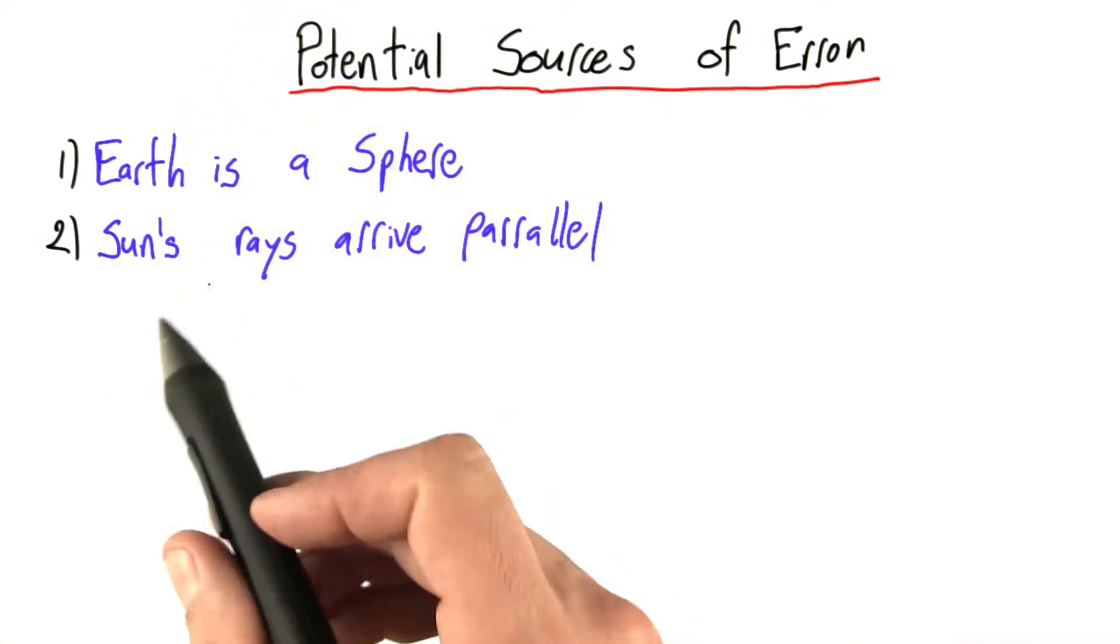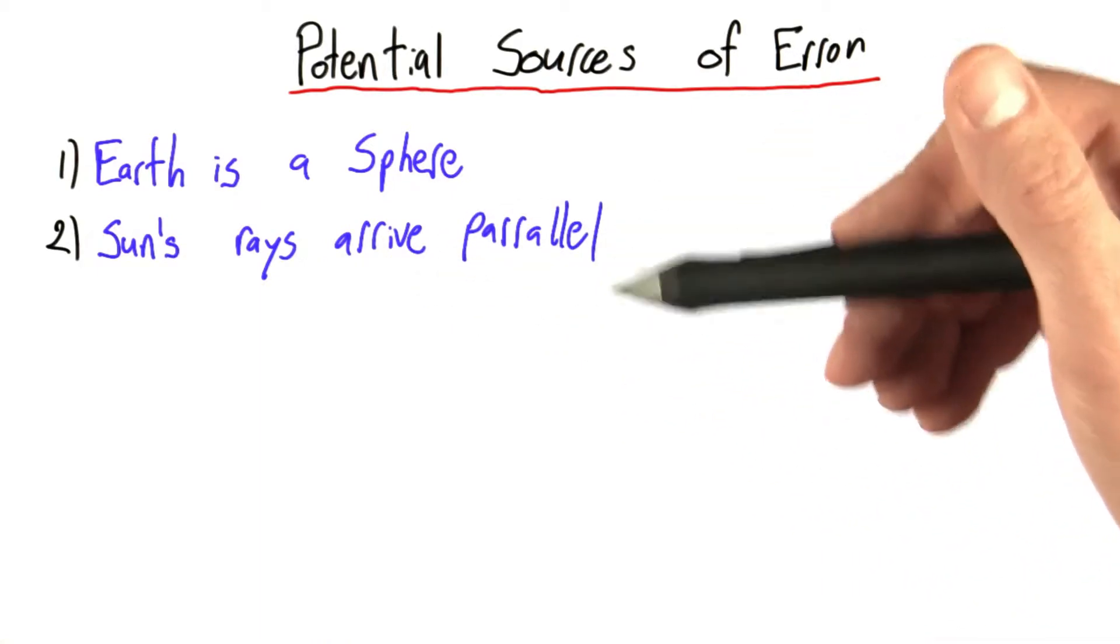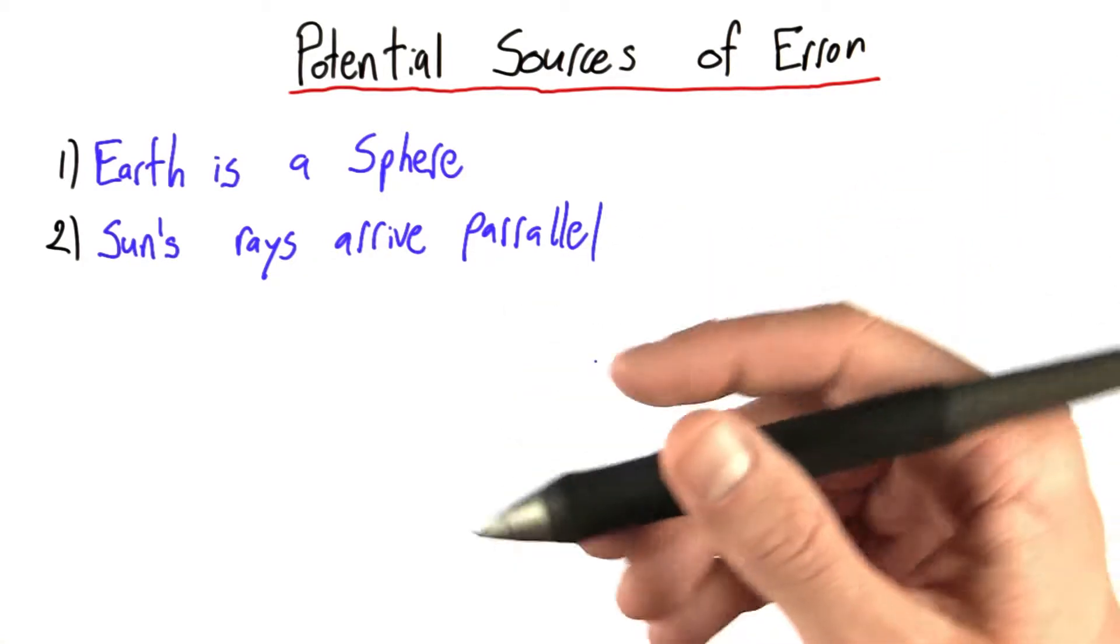We also used the assumption that the sun's rays arrive at the Earth parallel in different locations. We justified this by saying that the sun is so far away, those rays must be coming nearly parallel.